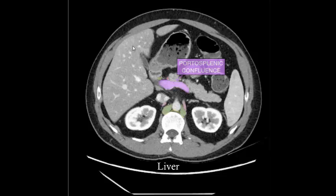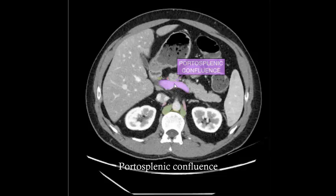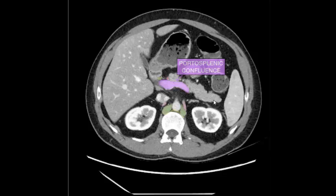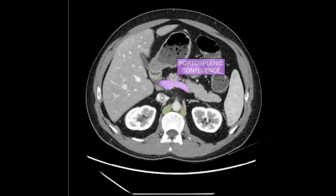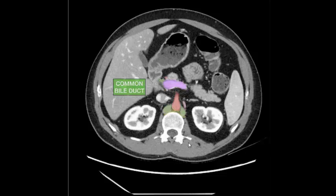Liver, gallbladder, abdominal aorta, head of pancreas, head of pancreas, body of pancreas, tail of pancreas, splenic vein, transverse colon, gastric antrum of the stomach, neck, right and left celiac ganglia, inferior vena cava, abdominal aorta, common bile duct.